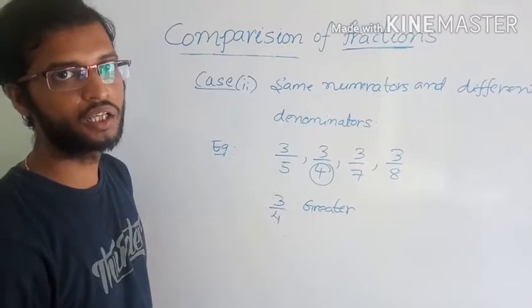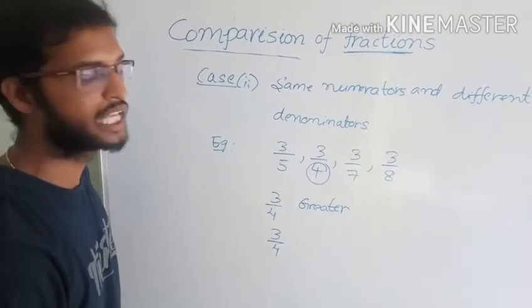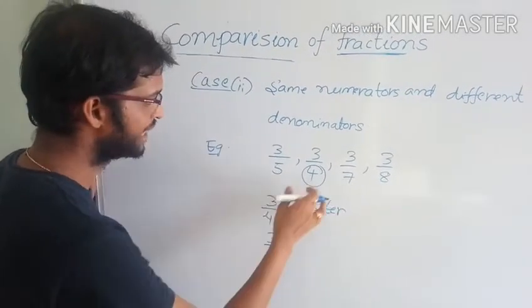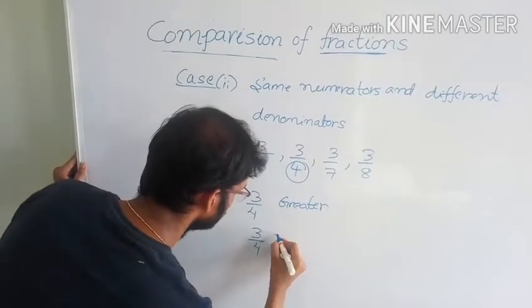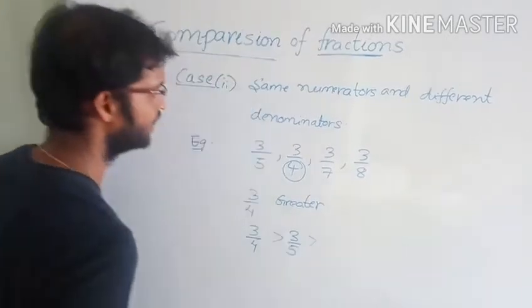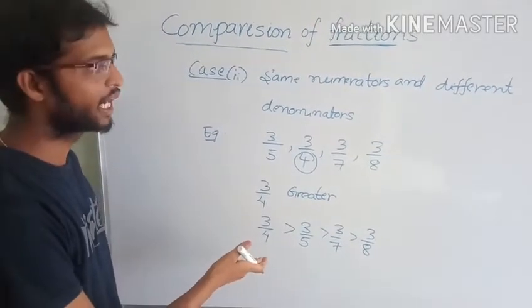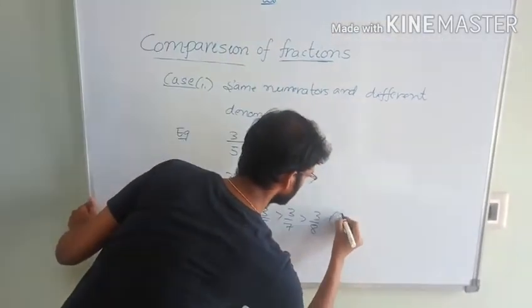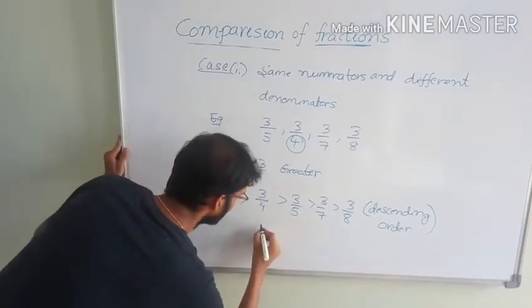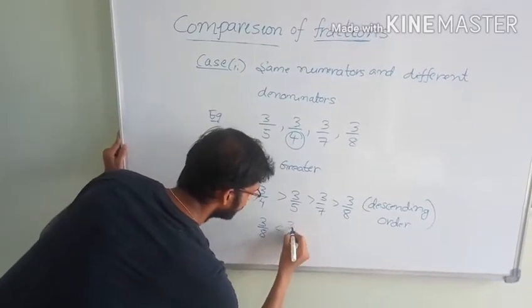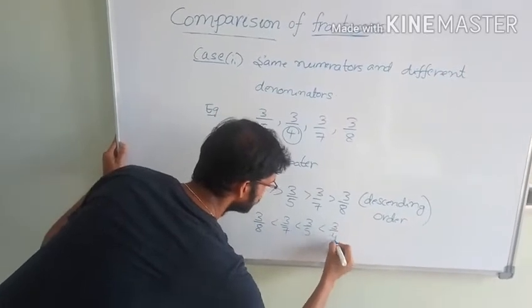Write in descending and ascending order. Descending order — greater to lesser: 3 by 4, then 3 by 5, then 3 by 7, then 3 by 8. Ascending order is the reverse process: 3 by 8, less than 3 by 7, less than 3 by 5, less than 3 by 4.